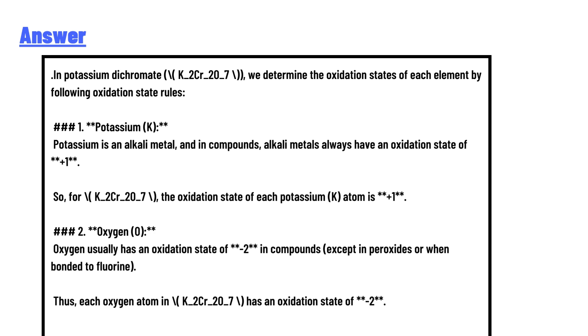In potassium dichromate (K2Cr2O7), we determine the oxidation states of each element by following oxidation state rules. Rule #1: Potassium (K) - Potassium is an alkali metal, and in compounds, alkali metals always have an oxidation state of +1. So for K2Cr2O7, the oxidation state of each potassium K atom is +1.